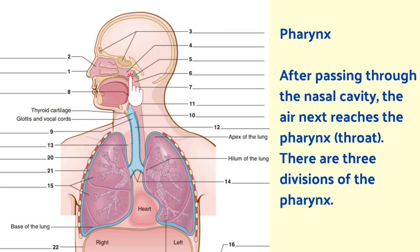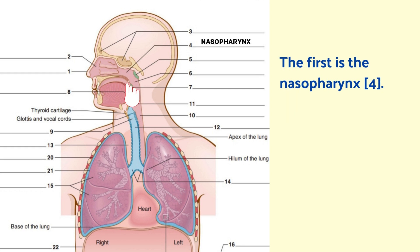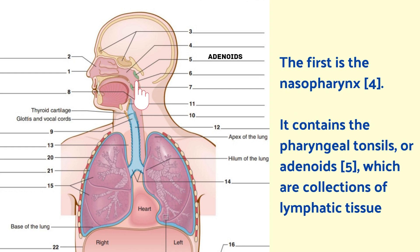Pharynx. After passing through the nasal cavity, the air next reaches the pharynx, i.e. throat. There are three divisions of the pharynx. The first is the nasopharynx, which contains the pharyngeal tonsils or adenoids, which are collections of lymphatic tissue.